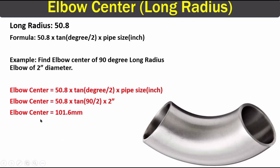So that's how we can find the elbow center of any elbow — short radius, standard radius, and long radius — with varying degrees like 45, 60, 90, or any other degree. If you find this tutorial helpful, please hit the like button and subscribe to my channel. Thanks for watching.